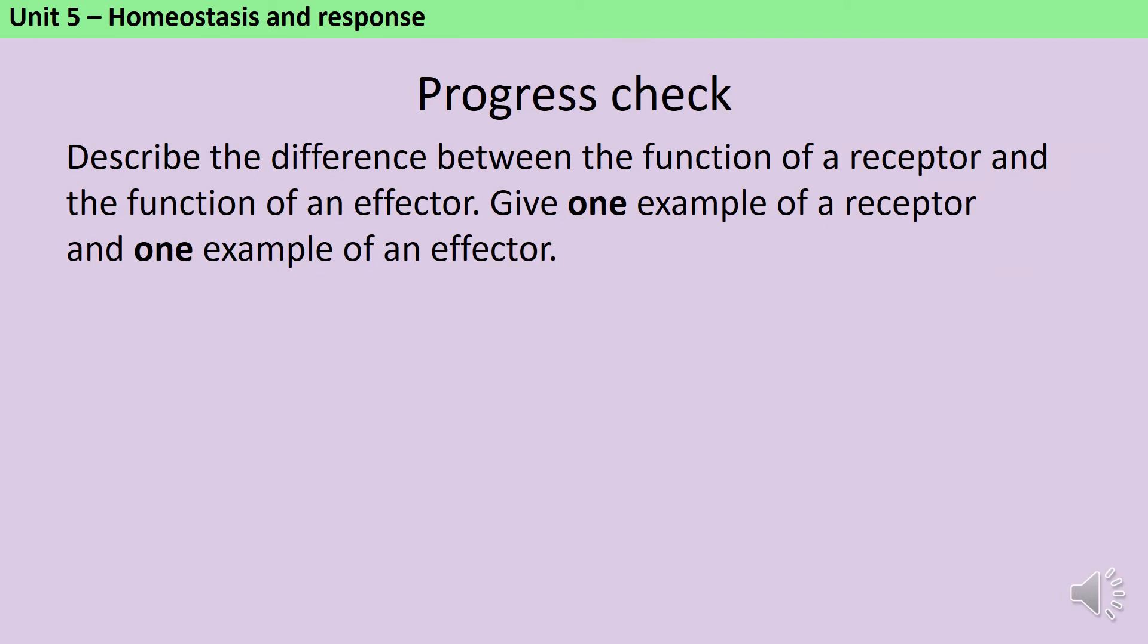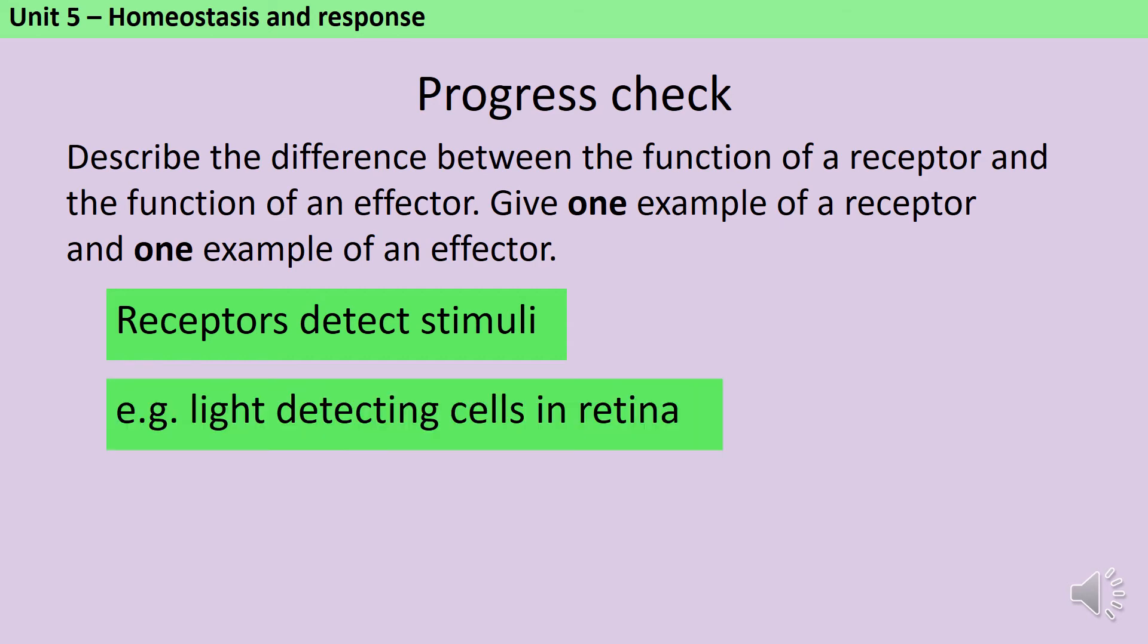In order to check that you've understood the vocabulary so far, pause the video and make sure that you can write down what the difference is between the function of a receptor and an effector. Give one example of each in your answer. A receptor is a cell that can detect a stimulus or a change in the environment. An example could be the light-detecting cells in the retina, or the cells in the ears that detect sound, or the cells in the nose and the tongue that detect chemicals, or the cells in your skin that detect pain, pressure, and changes in temperature. On the other hand, an effector affects a response. It makes a change happen, and it could be a muscle or a gland.